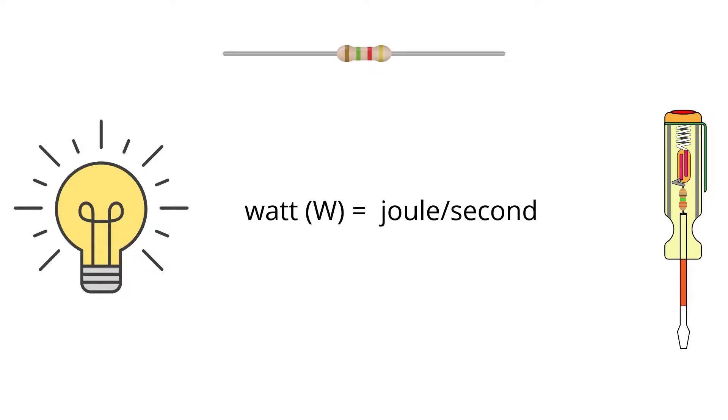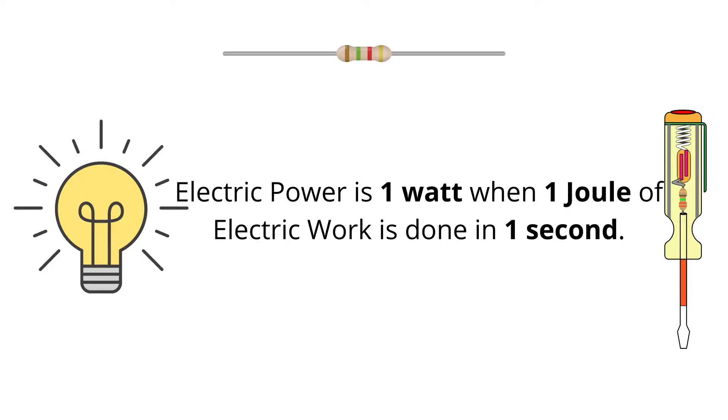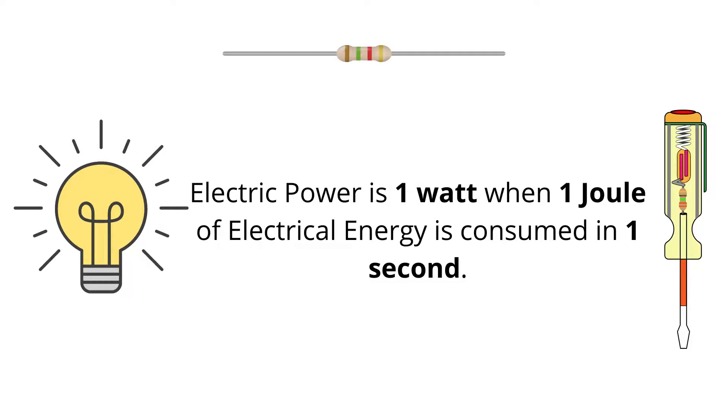So we can say electric power is one watt when one joule of electric work is done in one second. Or in terms of energy, we can say that electric power is one watt when one joule of electrical energy is consumed in one second.